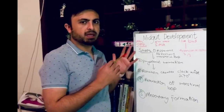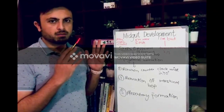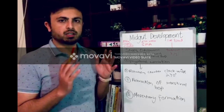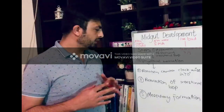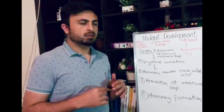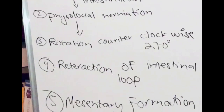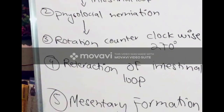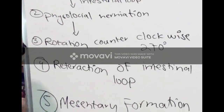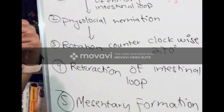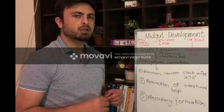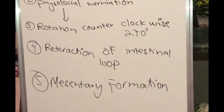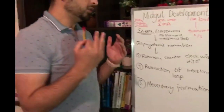The third step is rotation. Rotation in the midgut is 270 degrees counterclockwise. During physiological herniation, rotation is 90 degrees. When the organs come back to the abdominal cavity, the rotation is 180 degrees. The fourth step is retraction of the intestinal loop — the organs return from the extra-embryonic cavity back to the abdominal cavity.